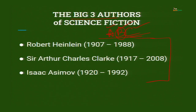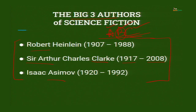Fantasy literature is a different genre altogether. Bradbury had immense potential and contributed to science fiction, but the contribution of these three authors — Heinlein, Clarke, and Asimov — is seminal. This is the timeline: Robert Heinlein 1907–1988, Sir Arthur Charles Clarke 1917–2008, and Isaac Asimov 1920–1992.